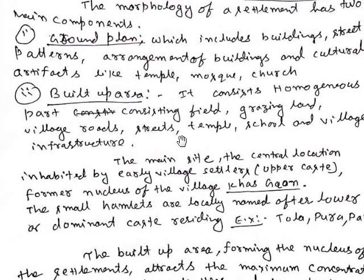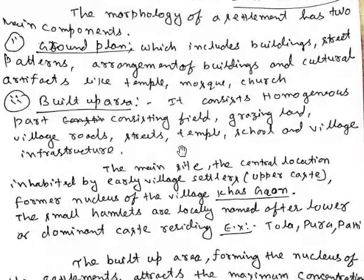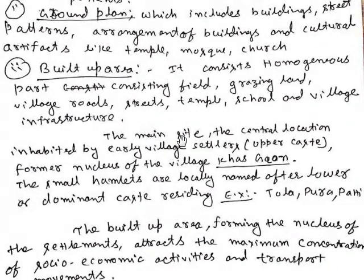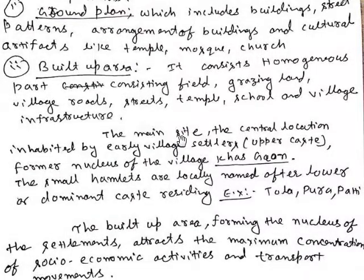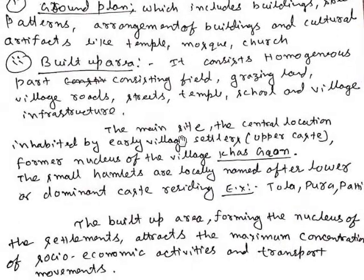The ground plane includes building site patterns and arrangements of buildings and cultural artifacts like temples, mosques, and churches. The build-up area is mainly homogeneous, covering grazing land, village roads or streets, temples, schools, and village infrastructure. The main sites are of central location inhabited by early villagers.